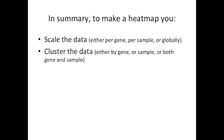In summary, to make a heatmap, you first scale the data, either per gene or globally. Second, you cluster the data, either by gene or sample, or both gene and sample. In this StatQuest, we focused on hierarchical clustering. And we've seen that within that, we've got to make some decisions. The first is, what's the distance metric going to be? Will it be Euclidean, Manhattan, or something else? And we also have to decide what the clustering method's going to be. Will it be Centroid, or Average, or look at the furthest point, or the closest point?